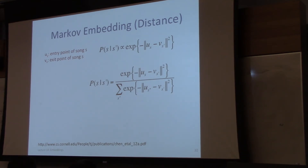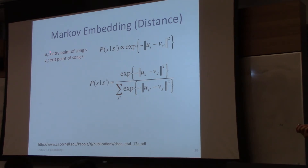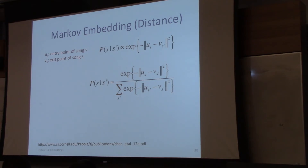Let's talk about song embedding first. In song embedding, we're going to learn a Markov distance-based embedding — we're going to learn two relatively low-dimensional representations for every song: a U and a V, where U is the entry point and V is the exit point.